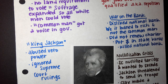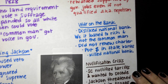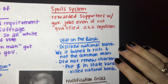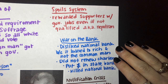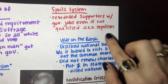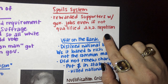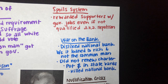Andrew Jackson practiced what we call the spoils system, where you reward your political supporters with government jobs, even if they're not qualified for the position. Sometimes this is referred to as nepotism — maybe you pick a friend or a family member for a job, even if they don't have the qualifications.